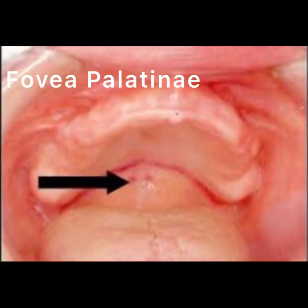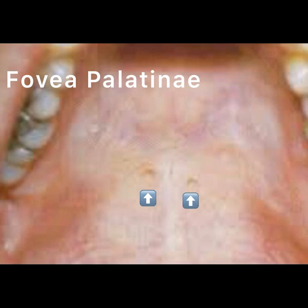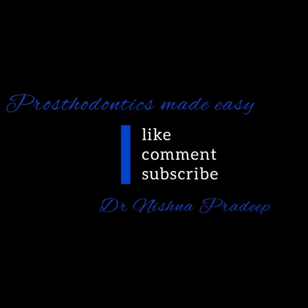The fovea palatinae are two small openings on either side of the midline in the palate, formed by the merging of ducts of several minor mucous glands. Their position varies across different ethnic groups, but as a guideline, the denture can extend one to two millimeters beyond the fovea palatinae, making them a useful arbitrary reference for determining the posterior extent of the denture.